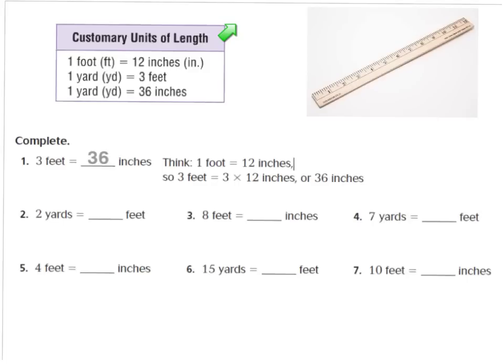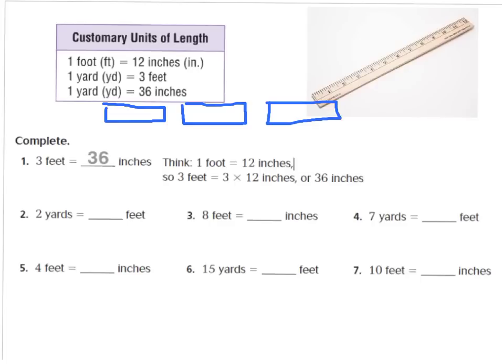Our example question says that 3 feet equals 36 inches. I know that 1 foot is equal to 12 inches — that's my ruler. So if I have 3 feet, I'm going to draw my ruler: here's 1 foot, here's 2, and here's 3. Each one equals 12 inches, so I have 12 plus 12 plus 12, which equals 36 inches. That's how they came up with this answer, and I used my models to draw out the problem.